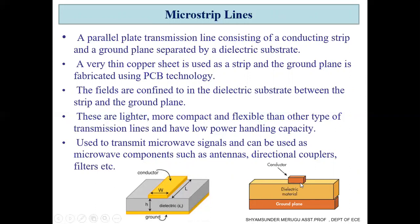Microstrip line structures are lighter, more compact, and more flexible than other types of transmission lines, but have low power handling capacity. Because of these properties, they are also called low profile structures. They can be used to transmit microwave signals and can be used as microwave components such as antennas, directional couplers, and filters.